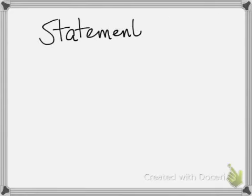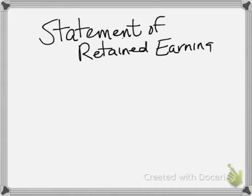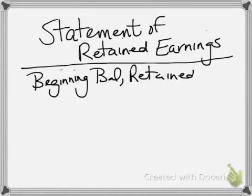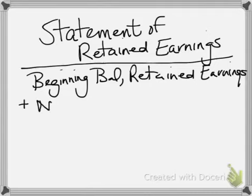The statement of retained earnings summarizes the change in the retained earnings balance for the company. We begin with the beginning balance of retained earnings. If it's a brand new company, the beginning balance is zero because there are no earnings from prior periods. But if it's the second or future years of the company, the ending balance from the prior year becomes the beginning balance for the current year.